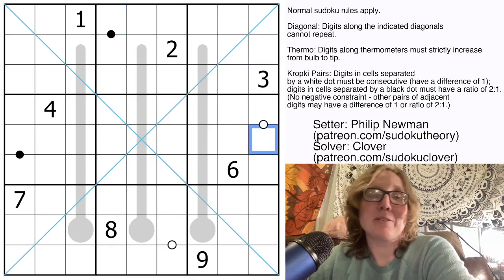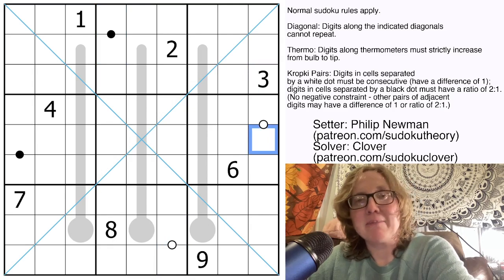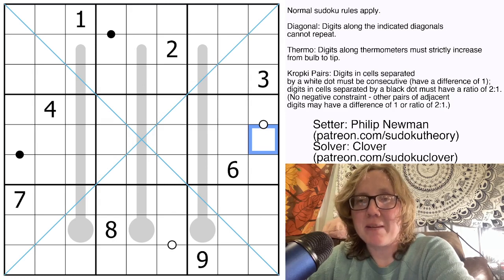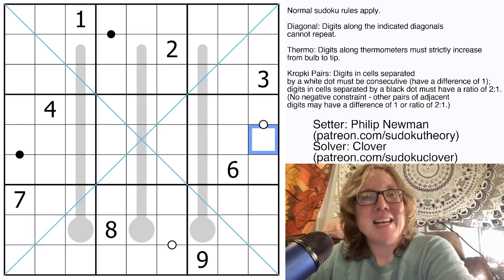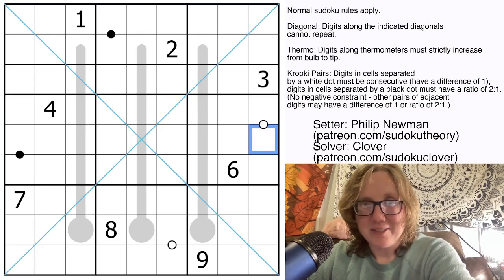There could be other pairs elsewhere in the grid that have that relationship that aren't marked with a black or white dot. And we know that because Philip has said in the rules, there's no negative constraint. This is also sometimes phrased as, not all possible dots have necessarily been given. So with that in mind, let's get started solving.